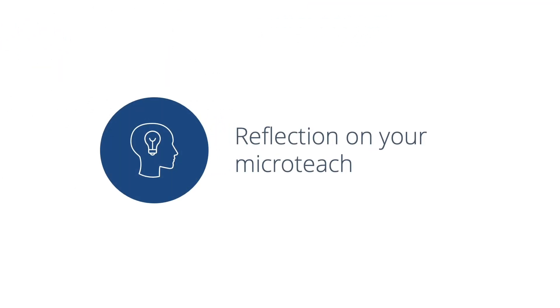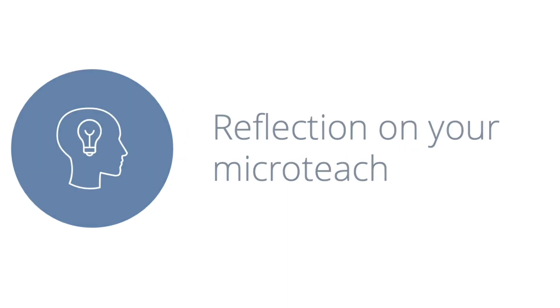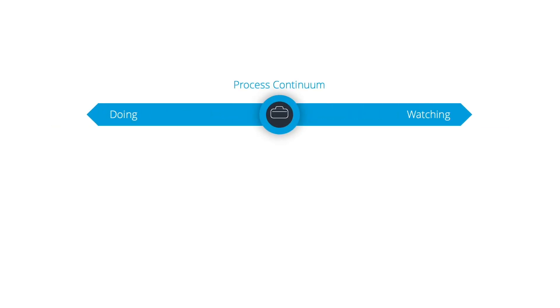To talk a little bit about how you might reflect on your teaching, I'm going to dip into a little bit of educational theory and begin with a spectrum — the process continuum that ranges from doing to watching. In the micro-teach sessions, you're going to have an opportunity to do a micro-teach, and on the opposite side, an opportunity to watch several micro-teachers. That's going to allow you to be an active experimenter and also do some reflective observation on what other people are doing.